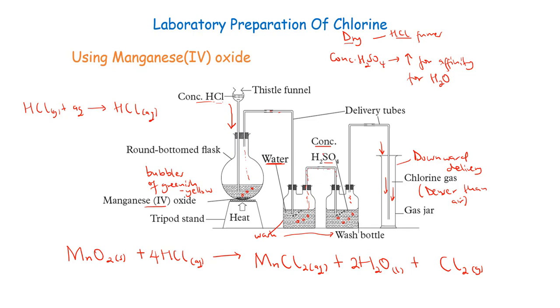So if at all you are not using concentrated sulfuric acid, you can use anhydrous calcium chloride. You can also use anhydrous calcium chloride in a U-tube. It should be anhydrous, meaning it should not be hydrated.